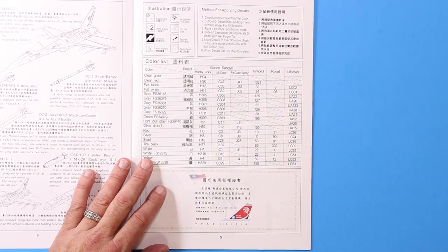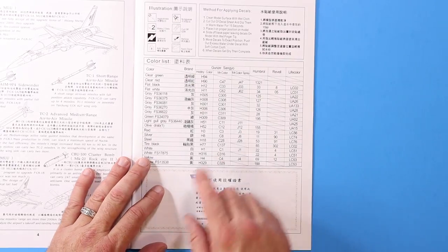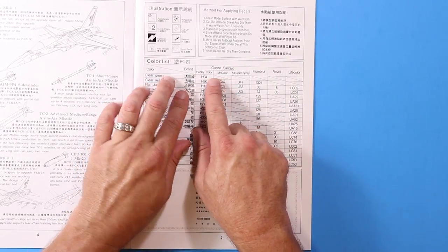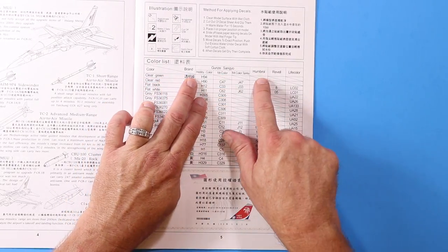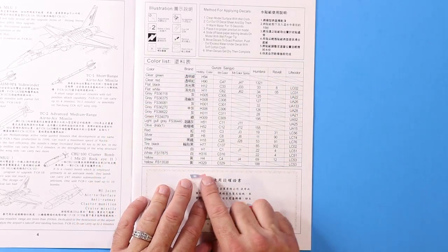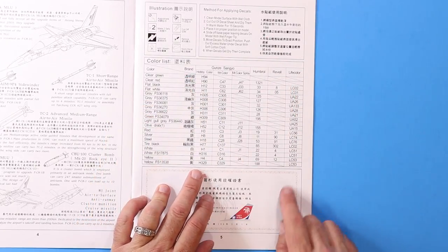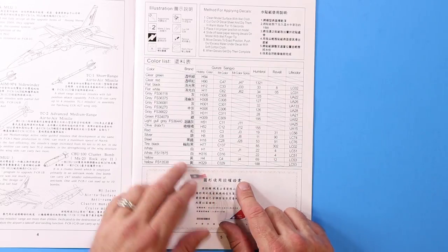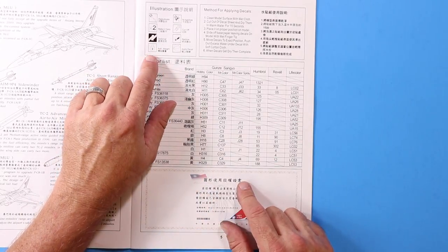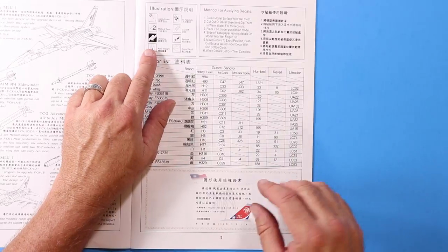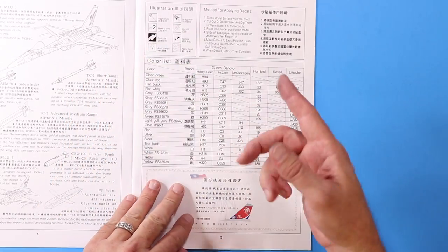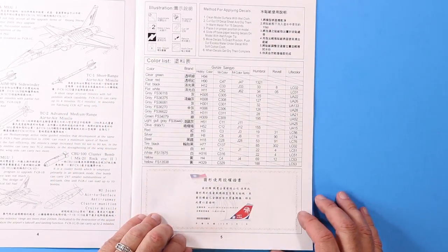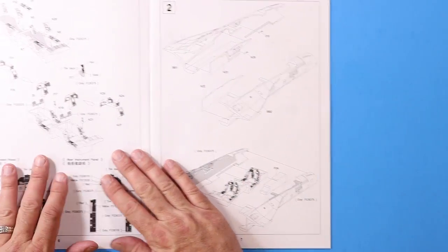Our color call out. Now this is kind of nice to see. They have gone with Gunze, Gunze, Humbrol, Revell, and LifeColor here. And they've called them out in all the different types. We have a little key up here for the illustrations. Optional, remove so on and so forth. That's nice. And they get into applying decals.